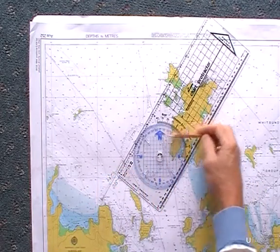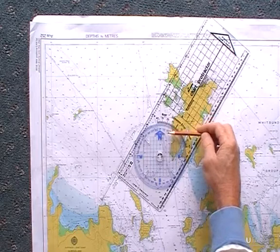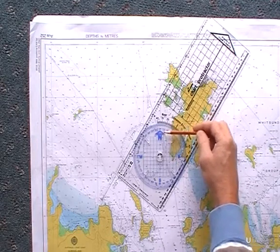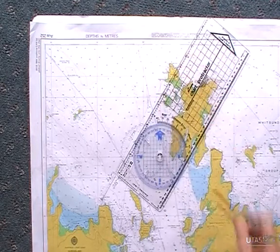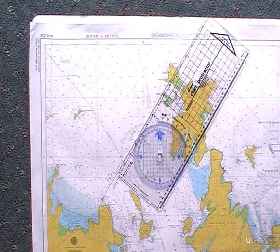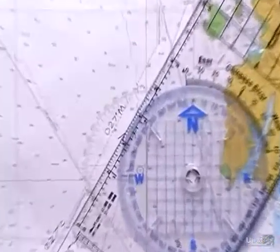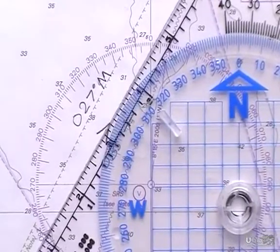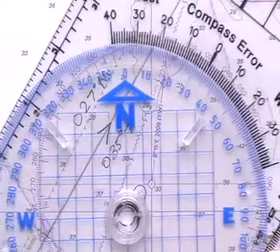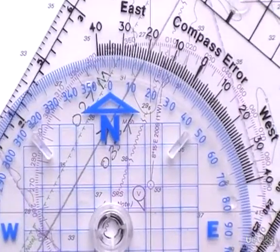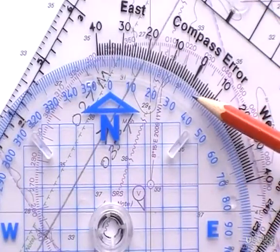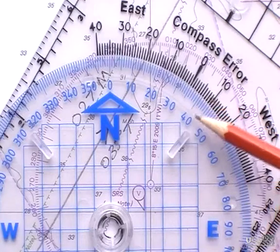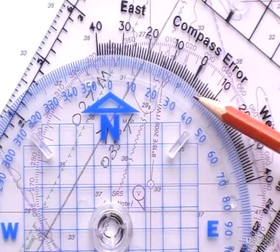Note that the northern part of this protractor is aligned to the northern part of the chart, and what you can see there is that the protractor is showing a heading of 035 degrees true.